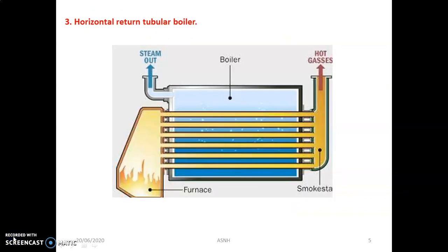The third important fire tube boiler is the horizontal return tubular boiler. The arrangement of the tubes and the boiler shell is horizontal, hence the name. The furnace, or combustion chamber, is on the left corner where combustion of fuel is carried out, and the tremendous amount of fumes generated continuously pass through the tube bundle. The flue gases flow through the tubes, exit through the draught system, and enter the atmosphere through the chimney. The rest of the shell is covered by water.